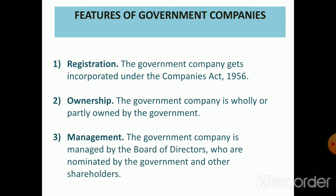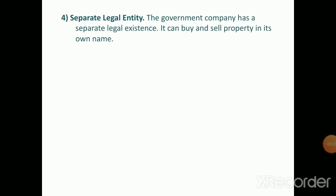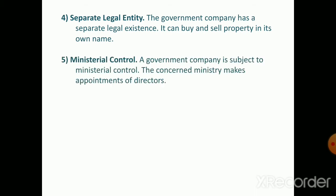The third feature is management. A government company is managed by a board of directors who are nominated by the government and other shareholders. The government also has the authority to appoint the majority of directors. The fourth feature is separate legal entity — a government company has a separate legal existence, meaning it can buy and sell property and enter into contracts in its own name.